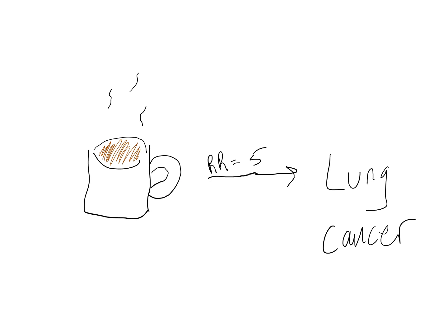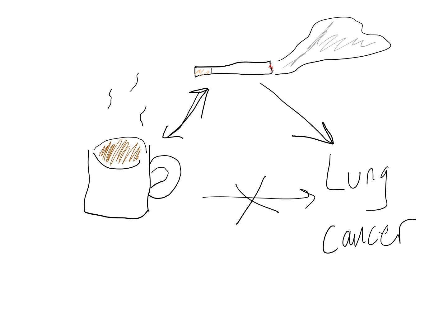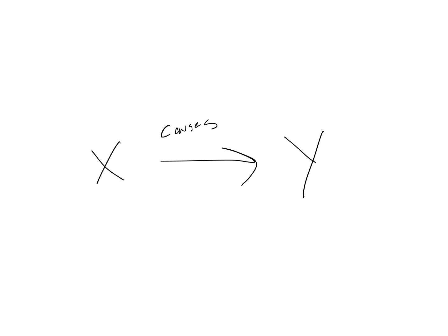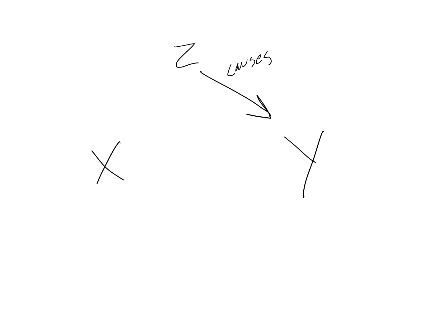So, we had an apparent finding that drinking coffee increases risk for lung cancer by a factor of five. But it was really a third variable — smoking — that caused the lung cancer, not the drinking coffee. This is called confounding bias. Confounding bias occurs when our results mislead us to think that one variable causes another, but it is really a third variable that causes our dependent variable, and this third variable also happens to be related to our independent variable.